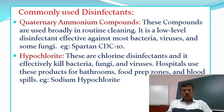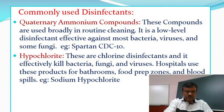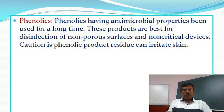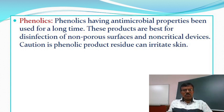Hypochlorite: these are chlorine disinfectants that effectively kill bacteria, fungi and viruses. Hospitals use these products for bathrooms, food prep surfaces and blood spills. For example, sodium hypochlorite. Phenolics have antimicrobial properties and have been used for a long time. These products are best for disinfection of non-porous surfaces and non-critical devices. Note that phenolic product residue can irritate skin.